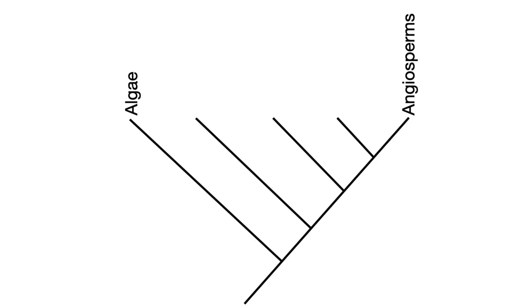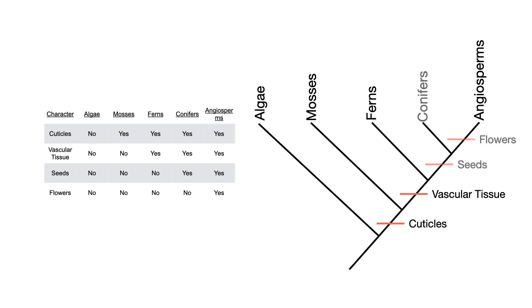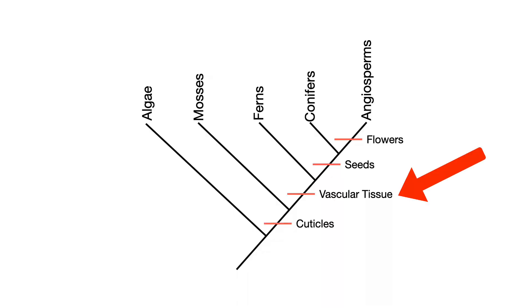There is an assumption being made here: the assumption is that evolution generally trends towards complexity. This isn't always true, as sometimes species will lose features through natural selection. For the AP exam, though, we can safely assume that more characters mean a later development through the evolutionary time frame. We can then take each species as they develop features like cuticles, vascular tissue, and seeds until we get the completed cladogram. Note that with character matrices, we could even draw hashes to indicate just where along the evolutionary road these features evolved.